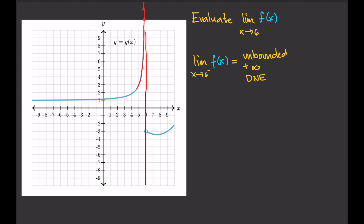For the right-hand limit of f of x as x approaches 6 from the right, we follow the graph and try to hit the red vertical line. Once we hit it, we find where we are on the y-axis — we're at negative 3. So the limit from the right is negative 3. Obviously, the left limit and the right limit are not the same, so the limit of f of x as x approaches 6 does not exist. That's it — see you in the next video.